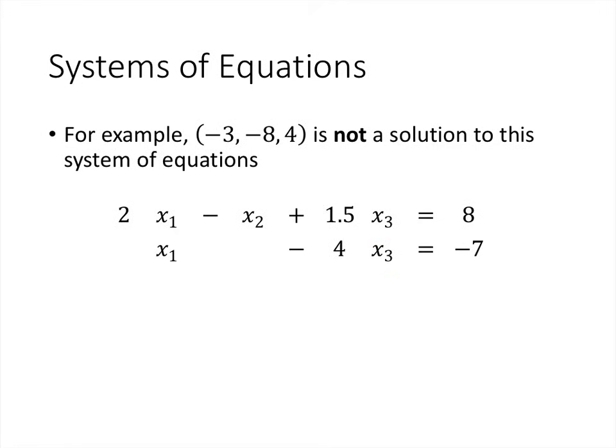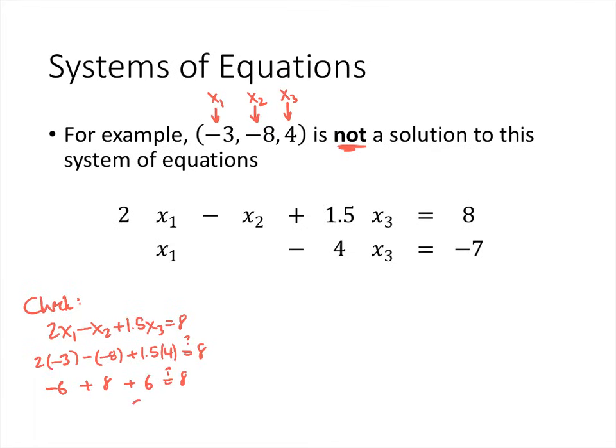For example, looking back at the system we looked at earlier, negative 3 comma negative 8 comma 4 is not a solution, and I'm going to show you why it's not a solution to this system. The way this works is that negative 3 is the value I want to plug in for x1, negative 8 is the value for x2, and 4 is the value for x3. I need to make all of these equations true. We're going to start by checking the first equation, 2x1 minus x2 plus 1.5x3 equals 8. When we plug in, we get 2 times negative 3 minus minus 8 plus 1.5 times 4, and the question is, does that equal 8? 2 times negative 3 is negative 6, minus minus 8 is plus 8, 1.5 times 4 is 6, and it does turn out that 8 equals 8. But it's not enough for one of the equations to be true. All of the equations have to be true for these same values.